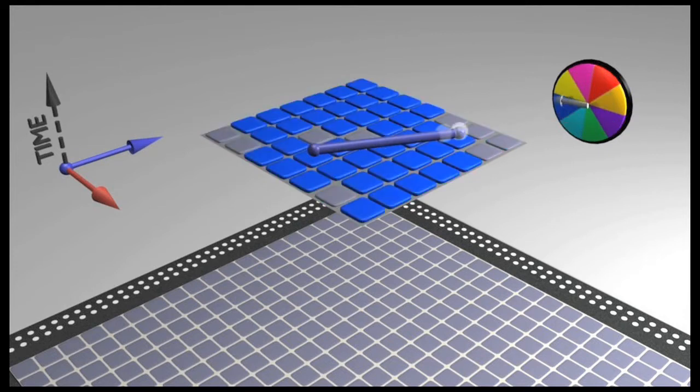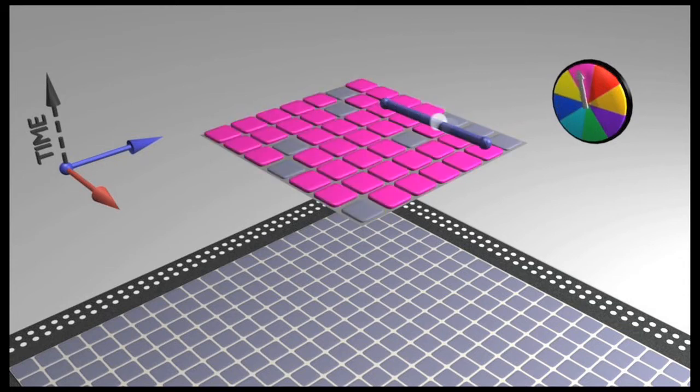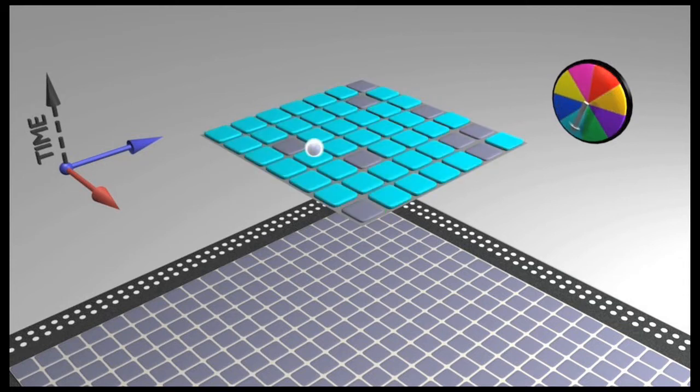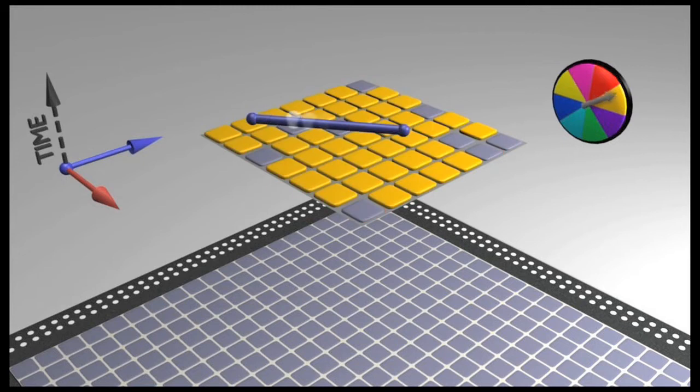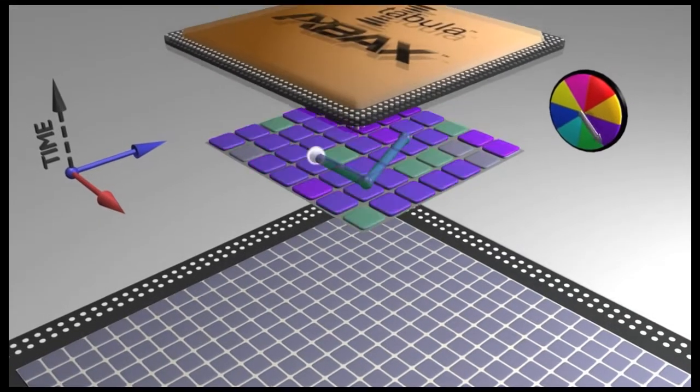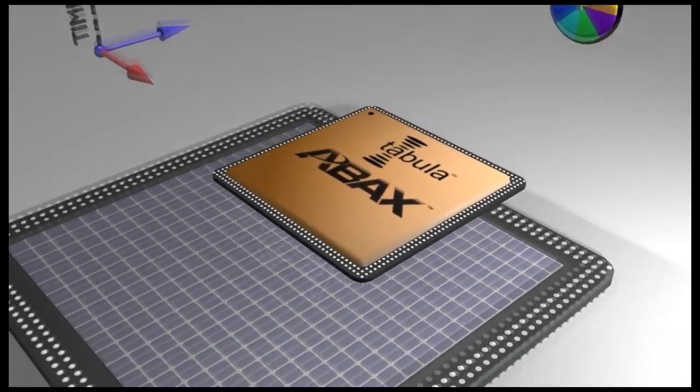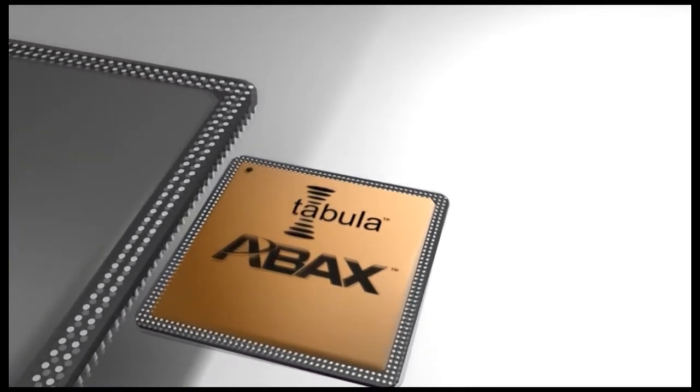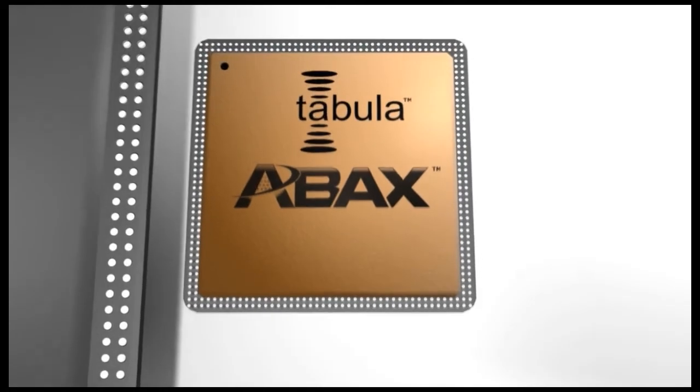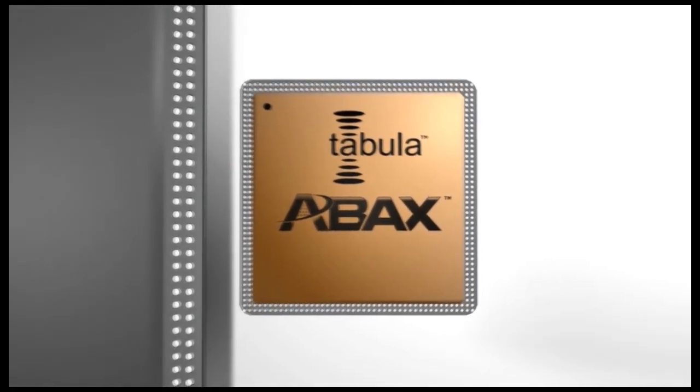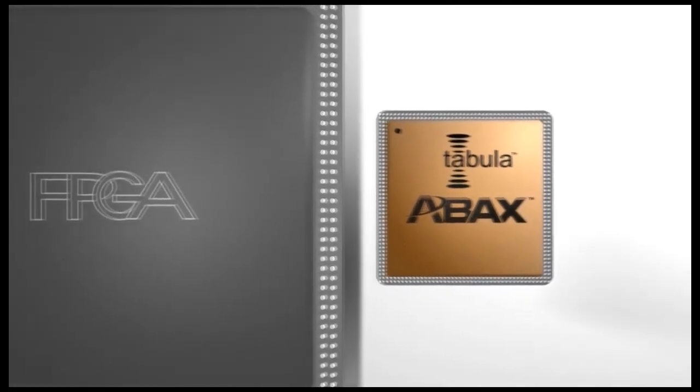During each of these eight folds, the individual fold performs a portion of the user function and stores the user data in place. The fold is then entirely reconfigured to perform the next portion of the function using the locally stored user data. After repeating this operation eight times, the entire user function has been performed using only a small fraction of the resources that would have been required by an FPGA.